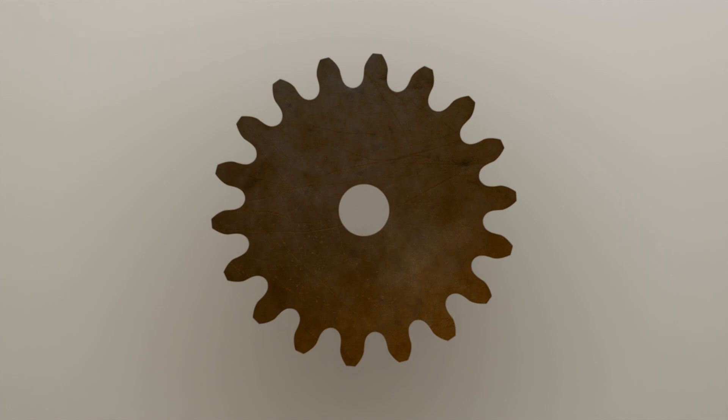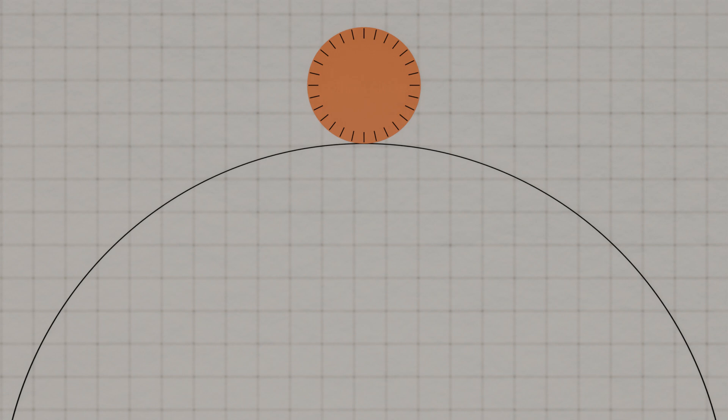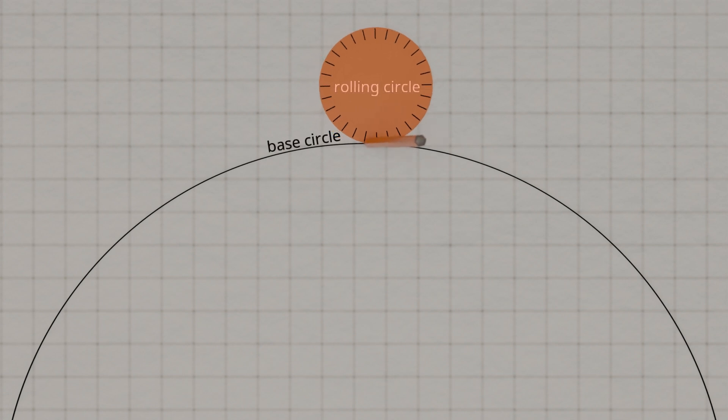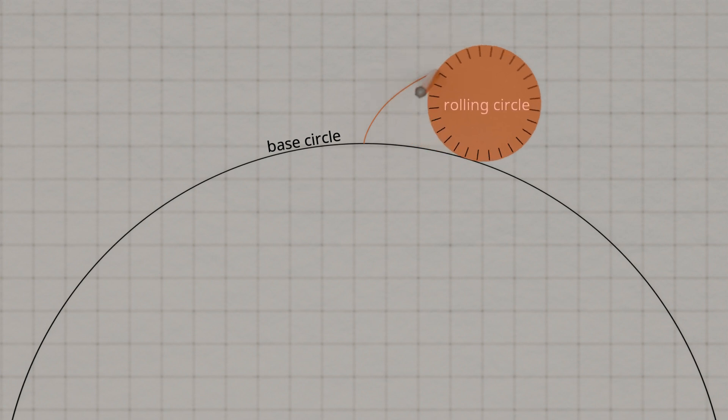First, however, we will take a closer look at the design of cycloidal gears before discussing the advantages and disadvantages of this type of gear in more detail. As the name implies, the tooth shape of a cycloidal gear is derived from a curve called a cycloid. A cycloid is constructed by rolling a circle on a base circle. A point on the rolling circle then describes the cycloid as a trajectory.